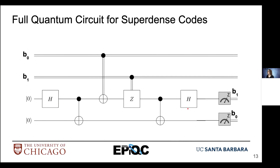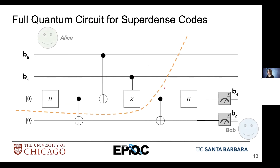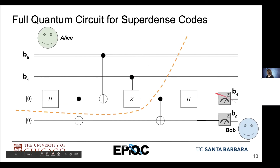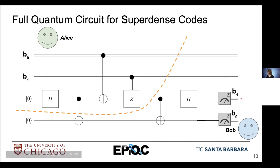Here is the full quantum circuit for superdense codes. The double lines indicate classical information, and we can have classically controlled quantum operations. If we divide the circuit up, Alice has the top part where she is more active in the communication protocol, whereas Bob is active in the bottom part — he inverts the entanglement and then performs measurement to recover those bits.